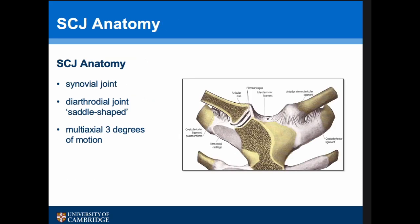This is a picture of the anatomy of the sternoclavicular joint from an anatomy textbook. It's a synovial joint, a diarthrodial joint, so it's saddle shaped, and as we saw in the introduction talk it's a multi-axial joint with three degrees of motion.